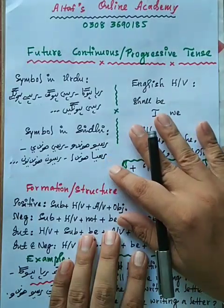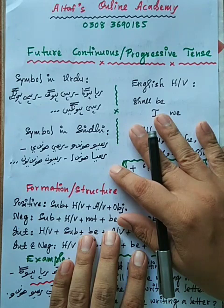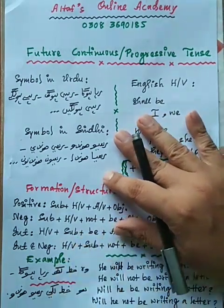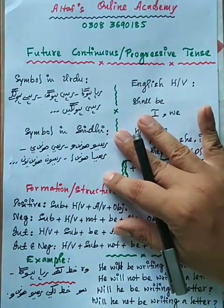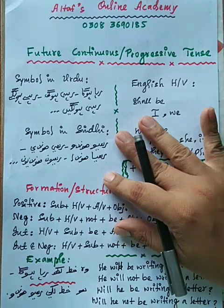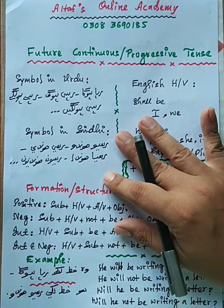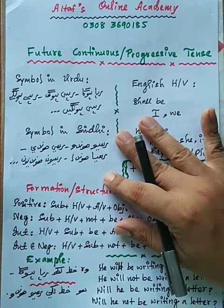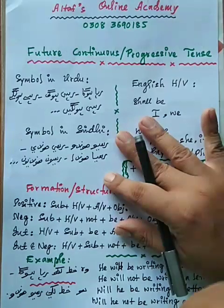Assalamu Alaikum class, this is Altaf Ahmad Kolachi and I welcome all of you to Altaf's Online Academy. Today we are going to the end of the continuous family tenses. We have already learned present and past continuous tenses, and now it's time to move on to the family's last tense, which is the future continuous or progressive tense.